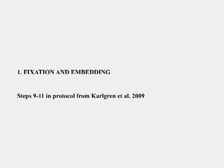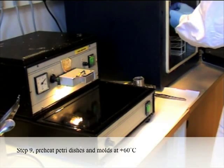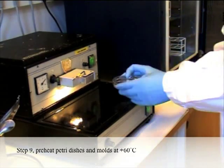1. Fixation and embedding. Steps 9 to 11 in the protocol. Step 9: Pre-heat petri dishes and molds at 60 degrees centigrade.